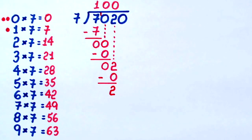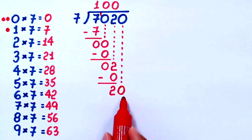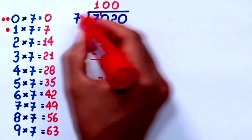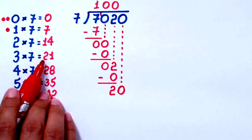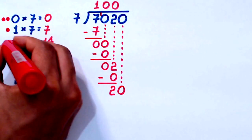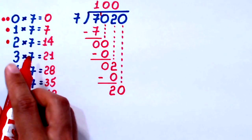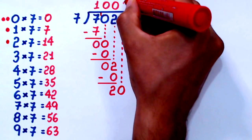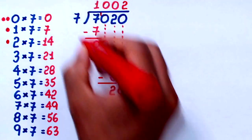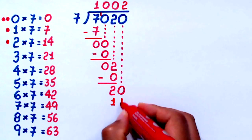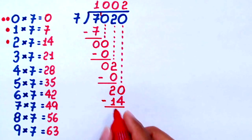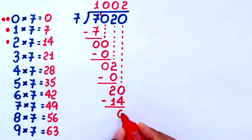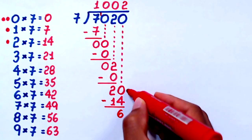After the subtraction, I bring down the next digit. By doing so, now I have here 20. I ask the question: how many times does 7 go into 20 without going over? 3 times 7 is 21, which is too much. So the number we were looking for is 2 — 2 times 7 is only 14. I write 2 here. Since 2 times 7 equals 14, that is what I write here. And now we subtract: 20 minus 14 equals 6. I can say that because 14 plus 6 equals 20.